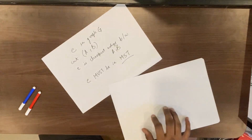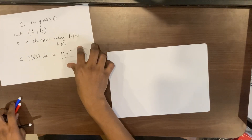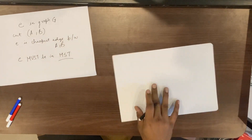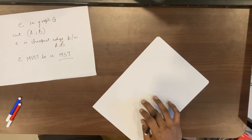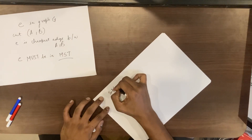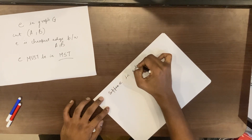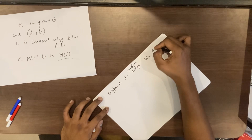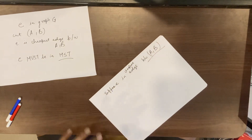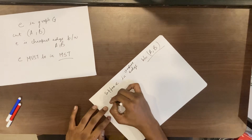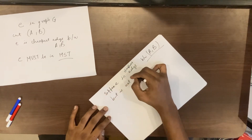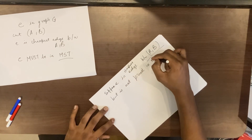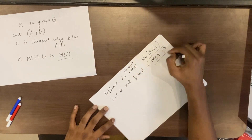We are going to assume that there are distinct edge costs, and E must be in the MST — that is the theorem's claim. Suppose E is the cheapest edge between A and B — meaning through the cut that separates the graph into A and B — but it's not present in MST T star.